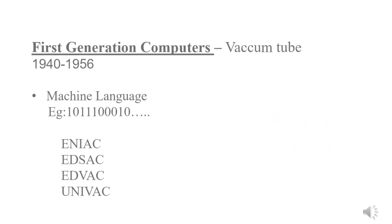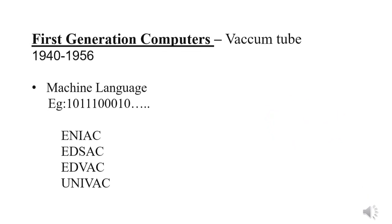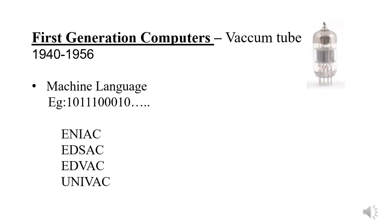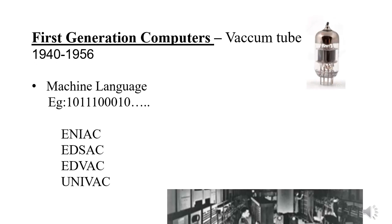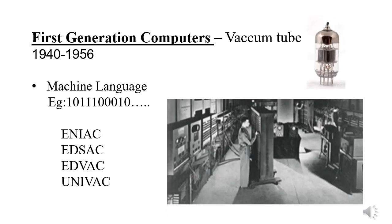The technology used in the first generation is the vacuum tube. Punch cards are used for input, output, and storing. Because machine language was used to enter the commands, the commands were executed quickly and there was no need for language translator software. But entering commands was a complicated task.